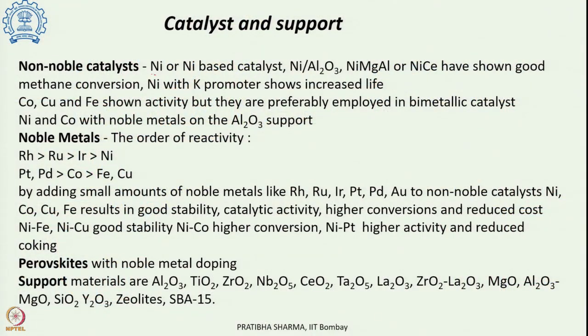The catalysts used in dry reforming can be either non-noble metal catalysts like nickel or nickel-based catalysts on supports such as Al2O3 — the most widely used combination — or Ni-Mg-Al and Ni-Ce systems. All these nickel-based catalysts show good methane conversion. The major problem is that although they have good initial activity, coke formation is higher. Promoters such as potassium can be used to increase stability and lifetime. Other non-noble metals like copper, cobalt, and iron also show good activity.